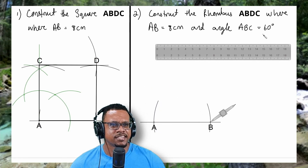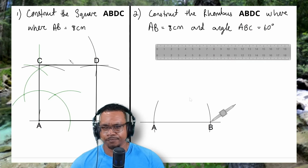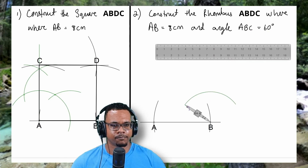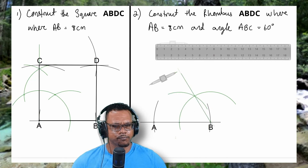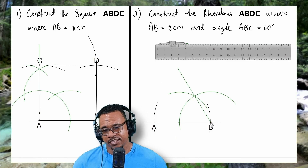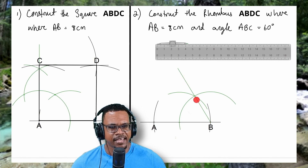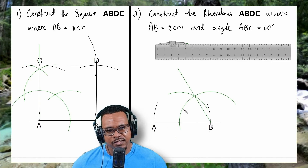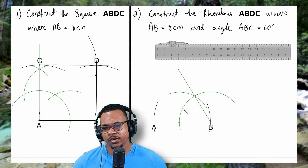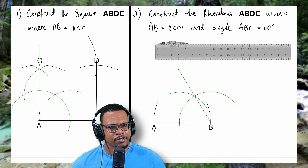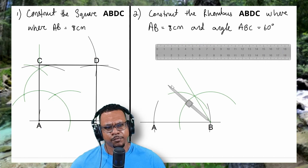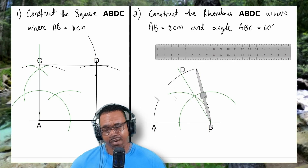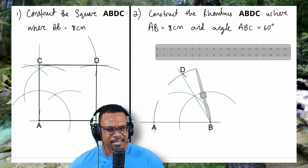Next, I'm going to construct the 60 degree angle at point B. Now that I've constructed my 60 degree angle, I know the length of this side would be 8cm long, because a rhombus, like a square, has 4 equal sides. So I'm going to place my compass point on the ruler and open it back out to 8cm. Then I'll place the compass point back at B and make an arc to intersect the line. I'll call that point where the arc intersects the line point D.